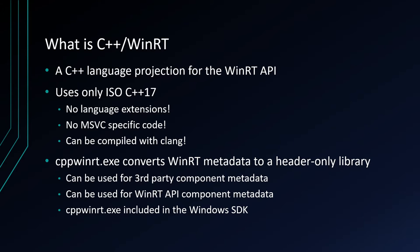This is handy because if you get a third-party WinRT component that doesn't ship with a C++ language projection but does ship with component metadata, you can generate the C++ language projection yourself. You can also regenerate the language projection for the entire WinRT system API. You might want to generate a subset of the metadata into the header-only library and put that into your source tree so you're building for a specific version of the WinRT runtime.